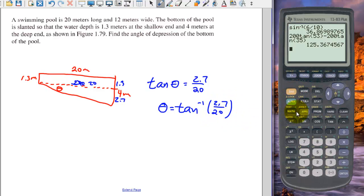And we go to our calculator. So we're going to calculate tan inverse of 2.7 divided by 20. And we get about 7.7 degrees for our angle here. And we have one more here.